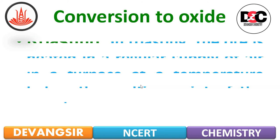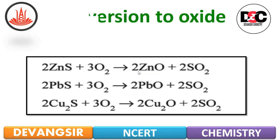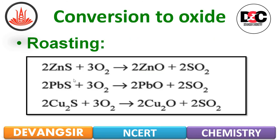The second technique is Roasting. In roasting, the ore is heated in a regular supply of air in a furnace at a temperature below the melting point of the metal. The three reactions given are: zinc sulphide, lead sulphide, and copper sulphide — in the presence of oxygen — giving zinc oxide, lead oxide, copper oxide, and SO2 gas is liberated.